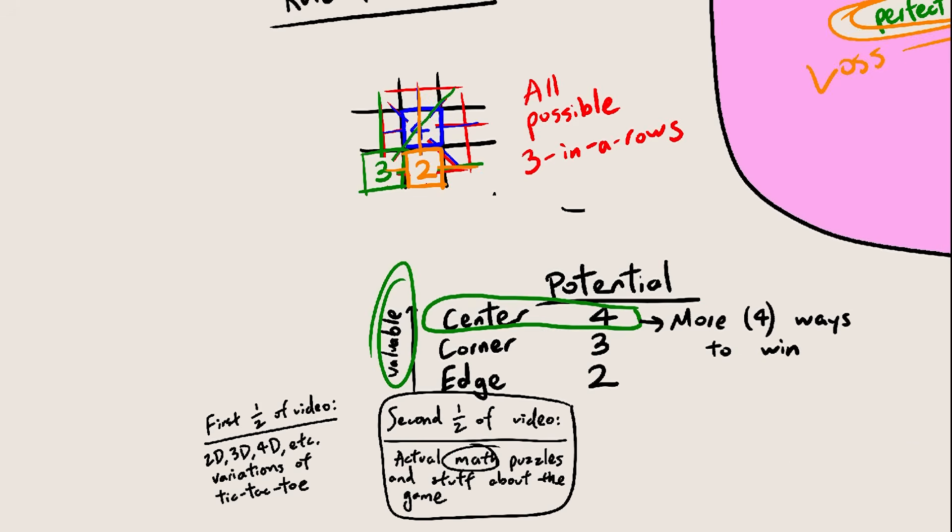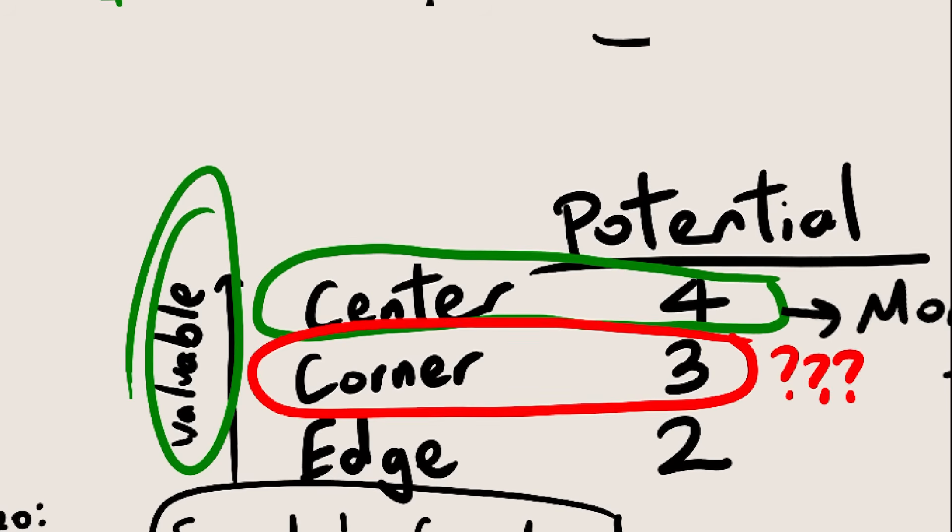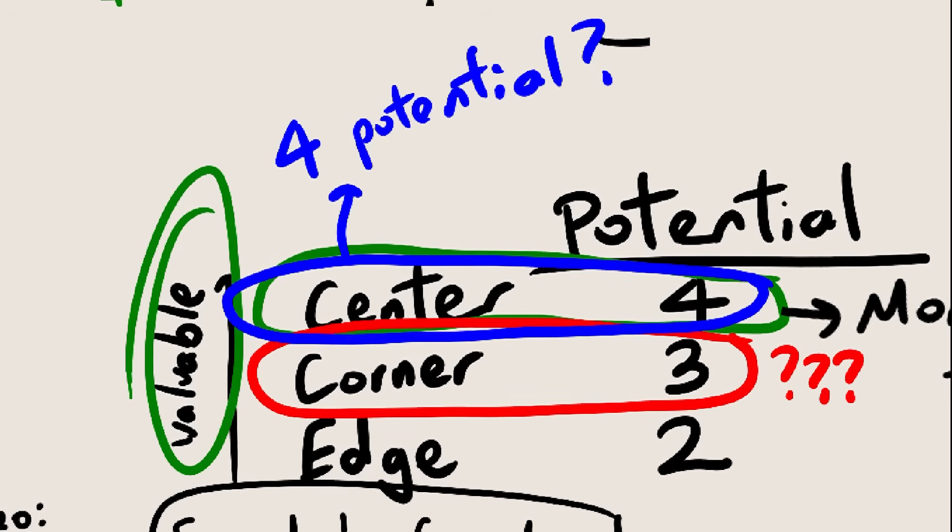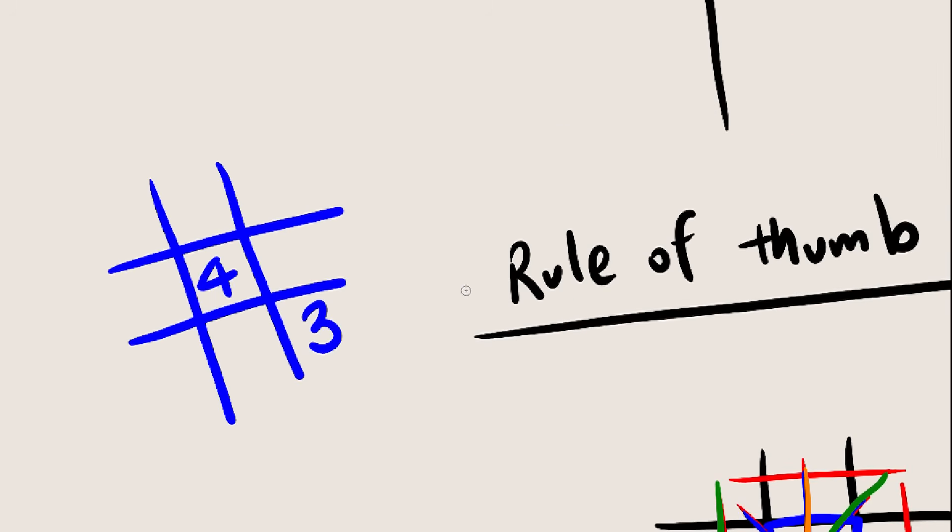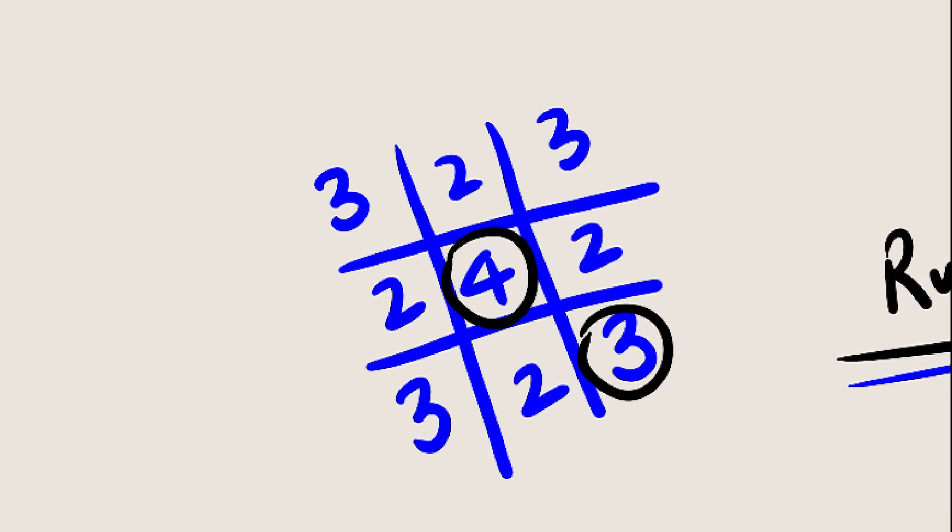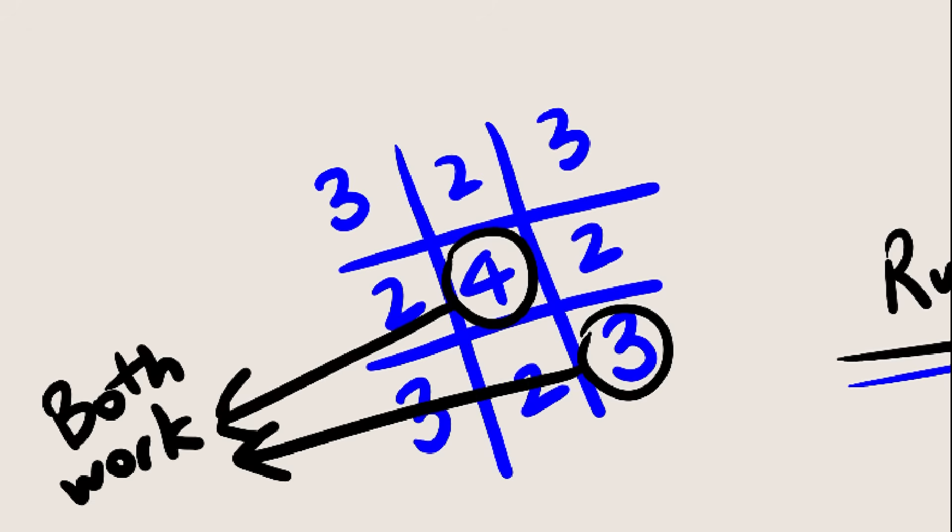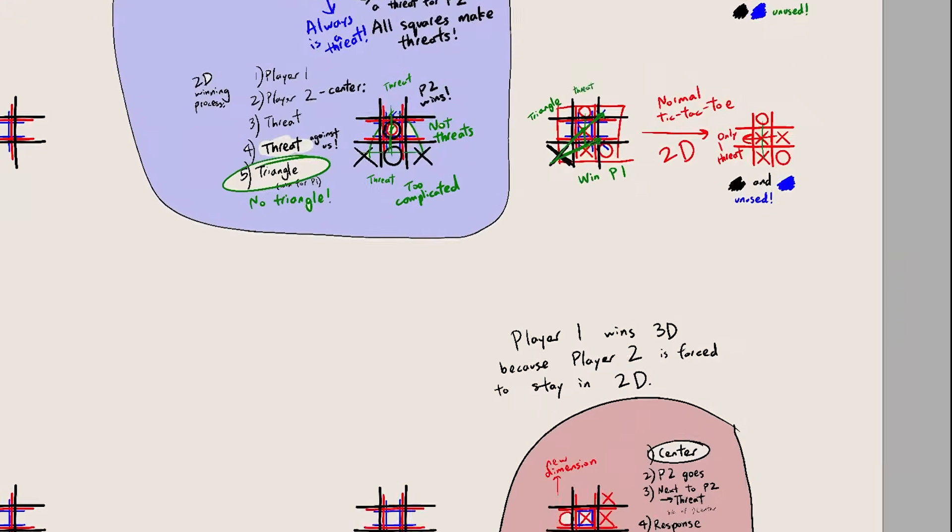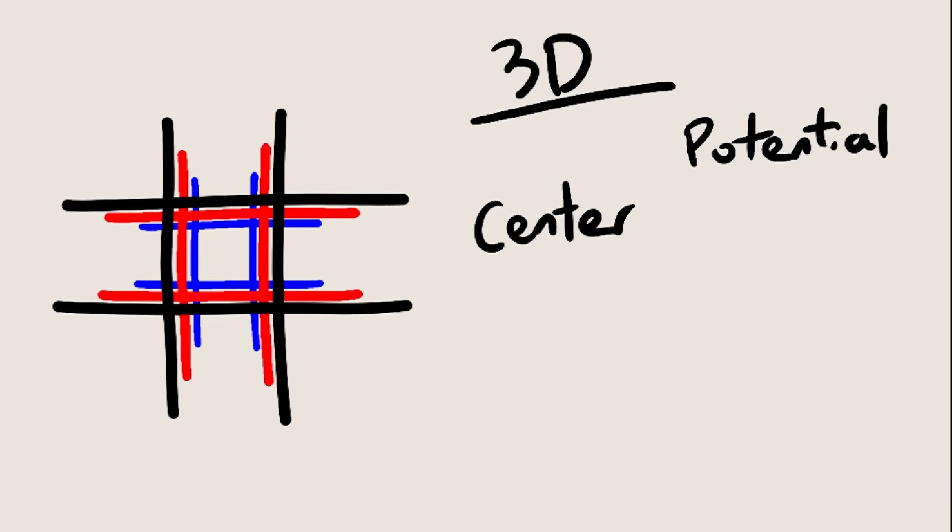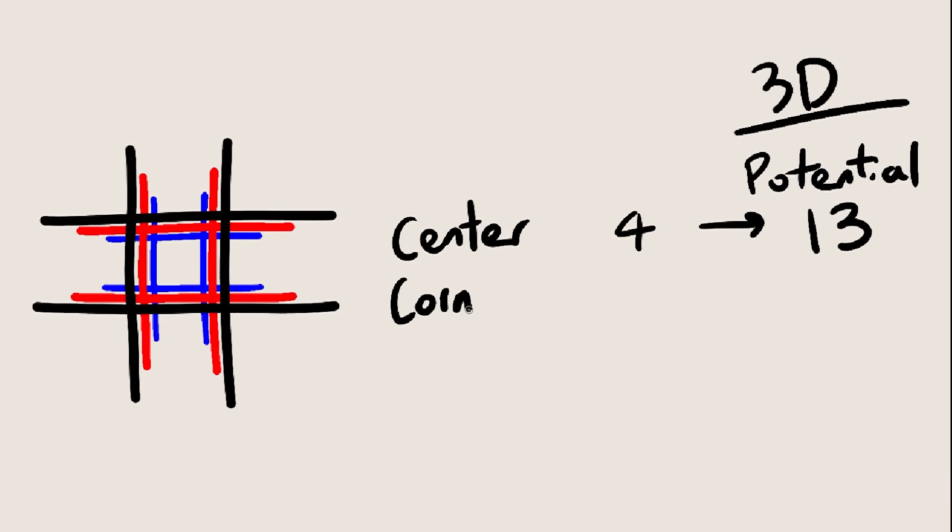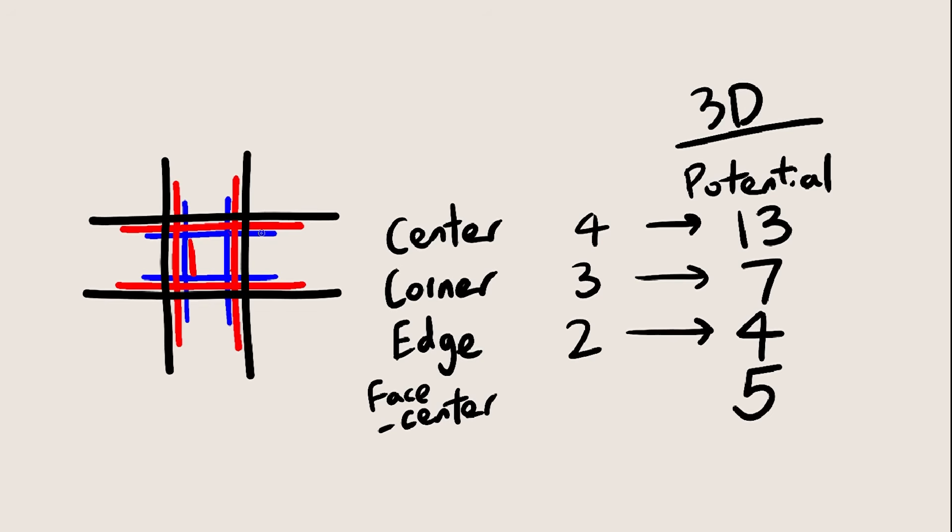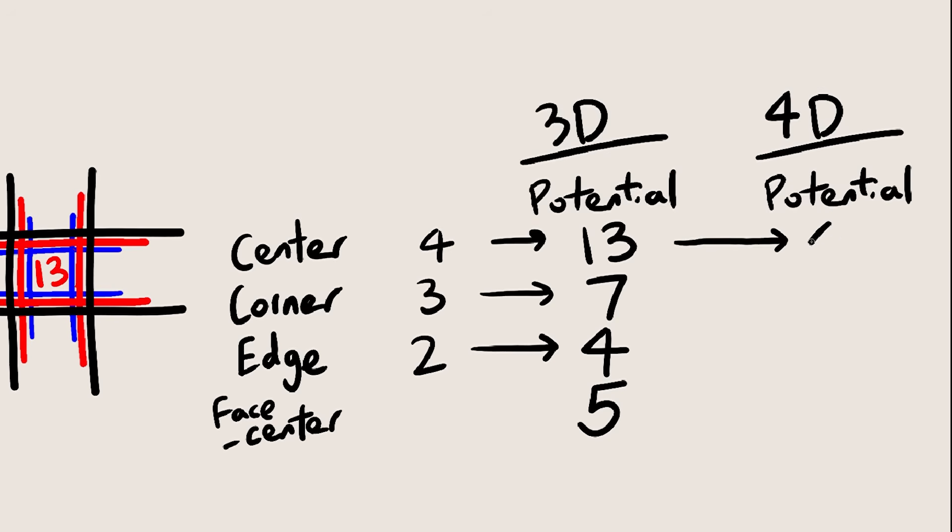Anyway, back to tic-tac-toe. Remember how in 2D tic-tac-toe, the best strategy is to go corner first? What's up with that? Why not center first for the higher potential? I think this is probably just a coincidence. After all, this is just a rule of thumb. 3 and 4 are pretty close to each other, so whether you pick the square with potential 4 or potential 3, it's not a decision that really affects the game too much. On the other hand, in 3D, the potential of the center spot grows to 13, while the potential of the corner is only 7, and the potential of the other two types of spots is even smaller. But this explains why in 3D, the best strategy shifts from going in the corner to going in the center. 13 is much larger than 7, so the center is much more valuable. This discrepancy only increases as the number of dimensions increases.